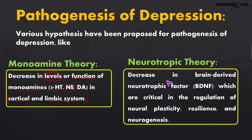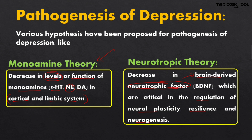The second theory is the neurotropic theory, which states that it is the decrease in brain-derived neurotropic factors. These neurotropic factors are a critical part of the regulation of neuroplasticity, resilience, and neurogenesis. A decrease in these neurotropic factors is responsible for depression. We will study the classification of antidepressant drugs mainly based on the monoamine theory.